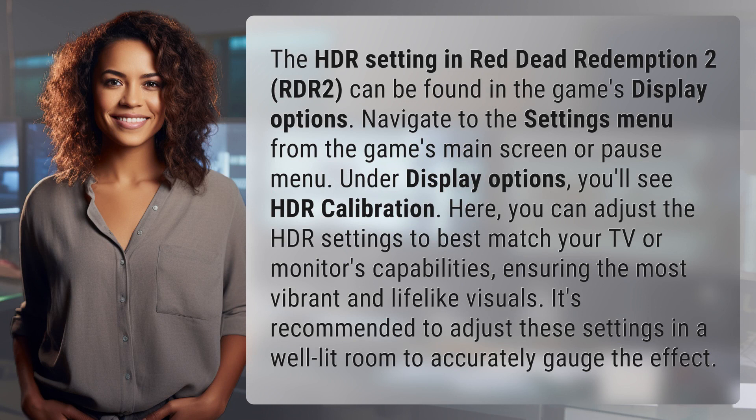The HDR setting in Red Dead Redemption 2 (RDR2) can be found in the game's display options. Navigate to the settings menu from the game's main screen or pause menu. Under display options, you'll see HDR calibration. Here, you can adjust the HDR settings to best match your TV or monitor's capabilities, ensuring the most vibrant and lifelike visuals. It's recommended to adjust these settings in a well-lit room to accurately gauge the effect.